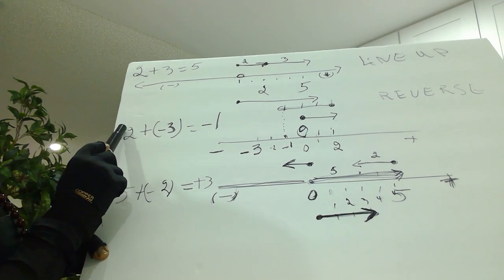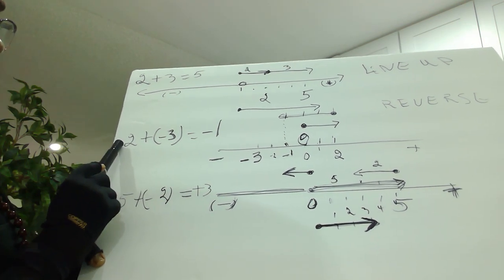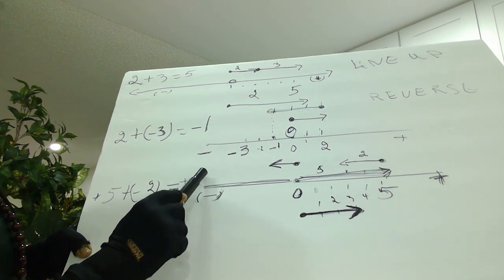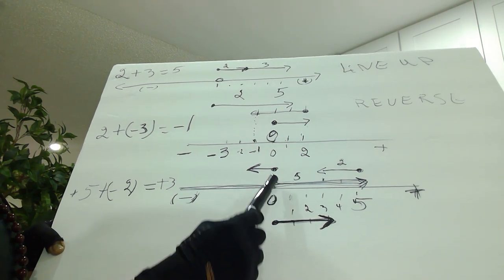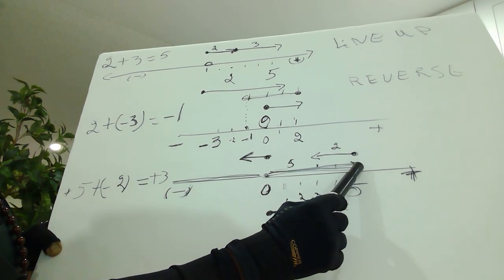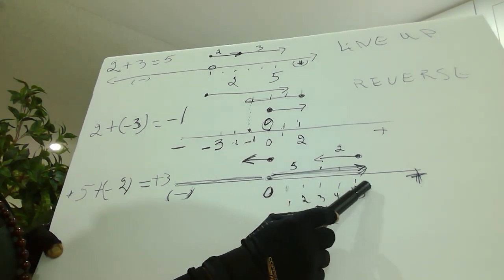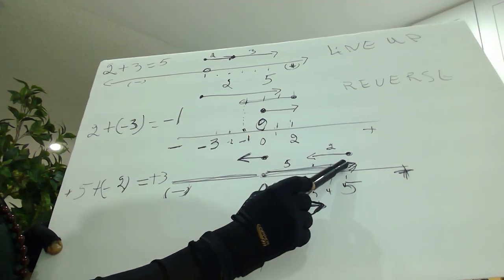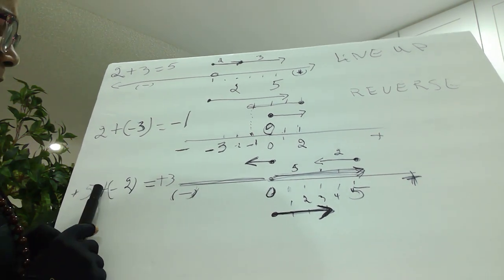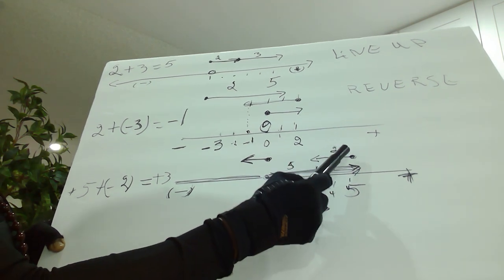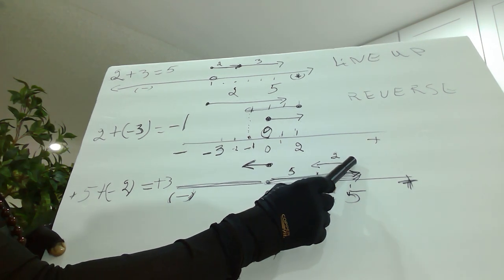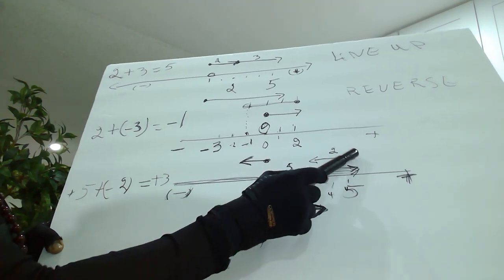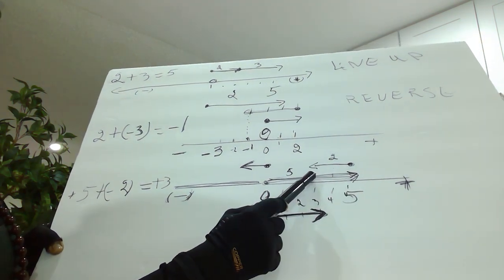The second example: plus five — even though I don't put the plus here, you have it. Plus five, adding the number minus two — you want to find the answer. So you represent the five: start at zero, going in the positive direction, count one, two, three, four, five. Now you are going to add minus two, so you start at five. Because it is minus, the direction has changed — you go the other way.